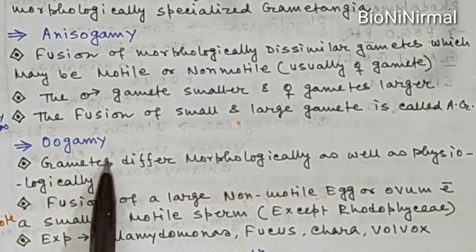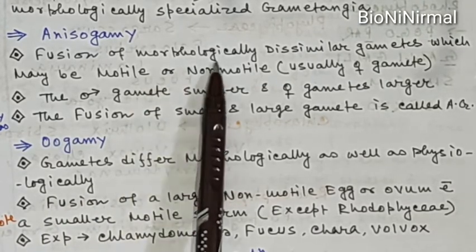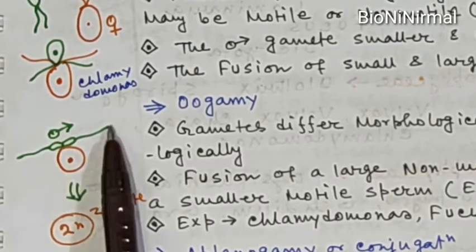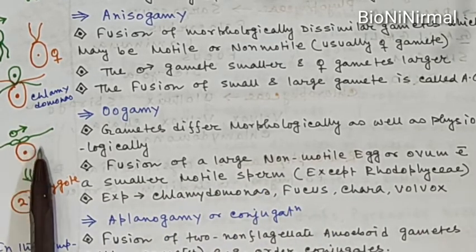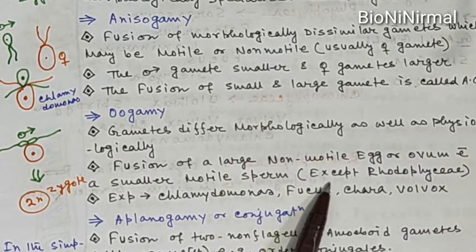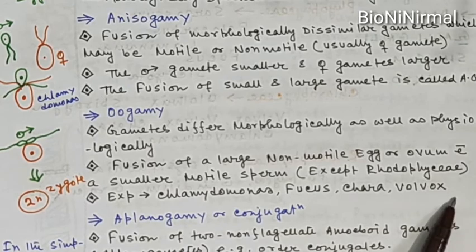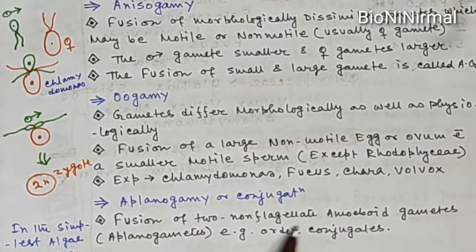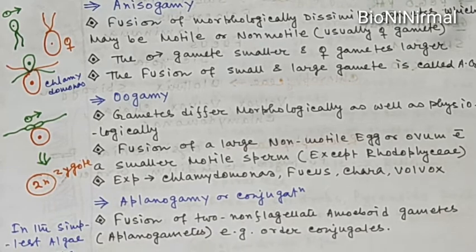Next is oogamy, where gametes differ morphologically as well as physiologically. There is fusion of a large non-motile egg or ovum with a smaller motile sperm. The exception is the Rhodophyceae. Examples of oogamy can be seen in Chlamydomonas, Fucus, Chara, and Volvox. The last type is aplanogamy or conjugation — the fusion of two non-flagellated amoeboid gametes. This is seen in the order Conjugales.